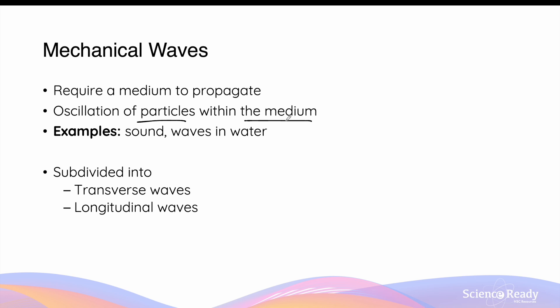For example, when a mechanical wave is transmitted through air, it's the oscillation of its air particles that allows the mechanical wave to transfer its energy from one location to another. There are numerous examples of mechanical waves, including sound and waves in water as we previously mentioned.